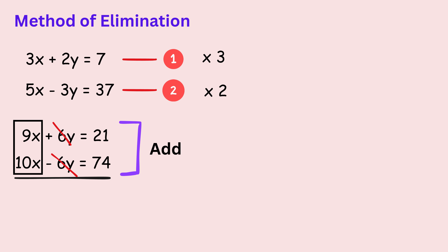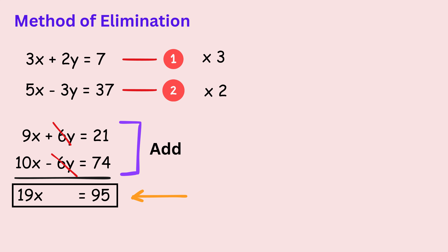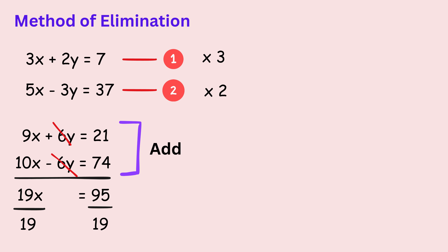9x plus 10x gives 19x. On the other side, 21 plus 74 gives 95. Now the equation is much simpler — we have 19x equals 95. To find x, we divide both sides by 19, and we get the value of x as 5.